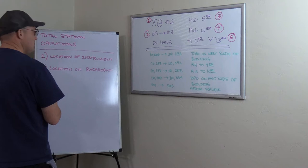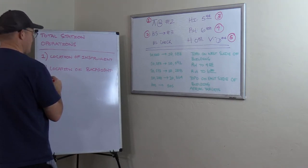And like, what is a good back site check? It depends on what you're doing. So my shop for topo, we wanna be within a few hundredths on our back site check, horizontal and vertical. So then we have the height of instrument.